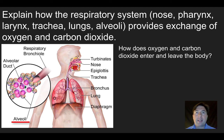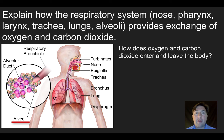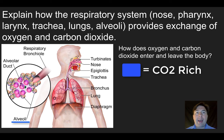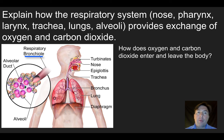The blood coming from the right side of the heart is very carbon dioxide-rich, while the air brought into the alveoli from the outside has a very low concentration of CO2. So carbon dioxide diffuses from the blood into the alveoli. When you breathe out, you're breathing out CO2-rich air — it goes up from the alveoli through the bronchioles, bronchus, trachea, and out through the nose. The result is oxygen coming in and carbon dioxide going out.